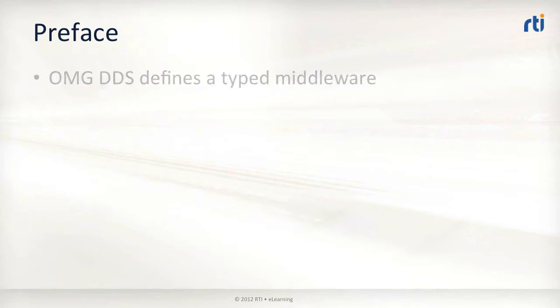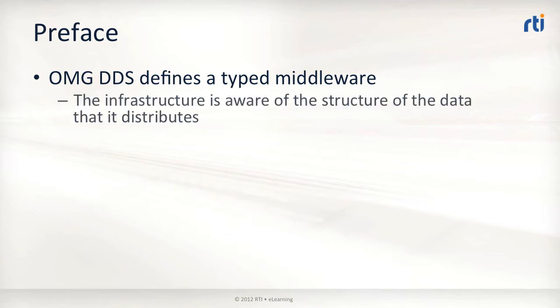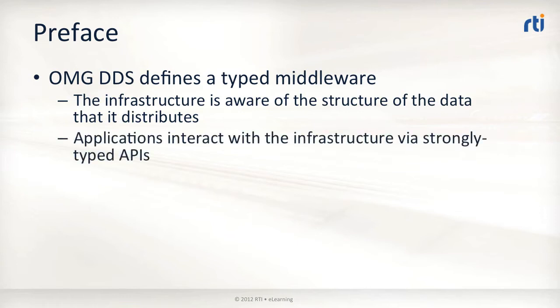Summarizing this presentation in one slide, OMG DDS defines a strongly typed data distribution middleware. This means that the infrastructure is aware of the structure of the data that it distributes between applications, and that those applications interact with the infrastructure by means of strongly typed generated APIs.